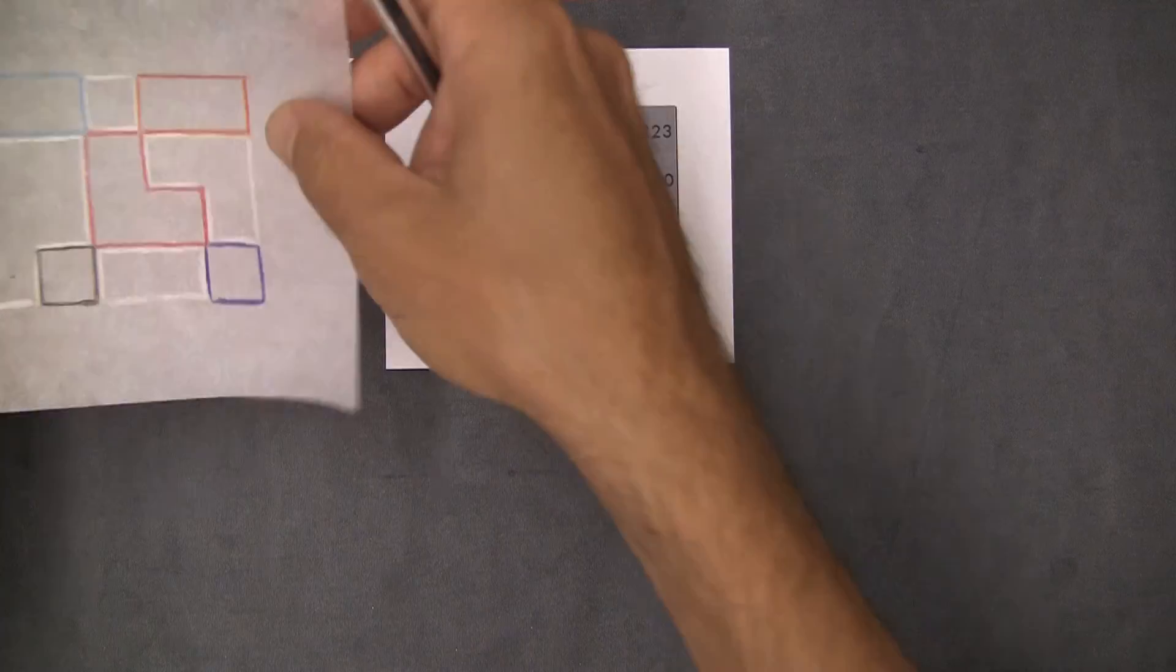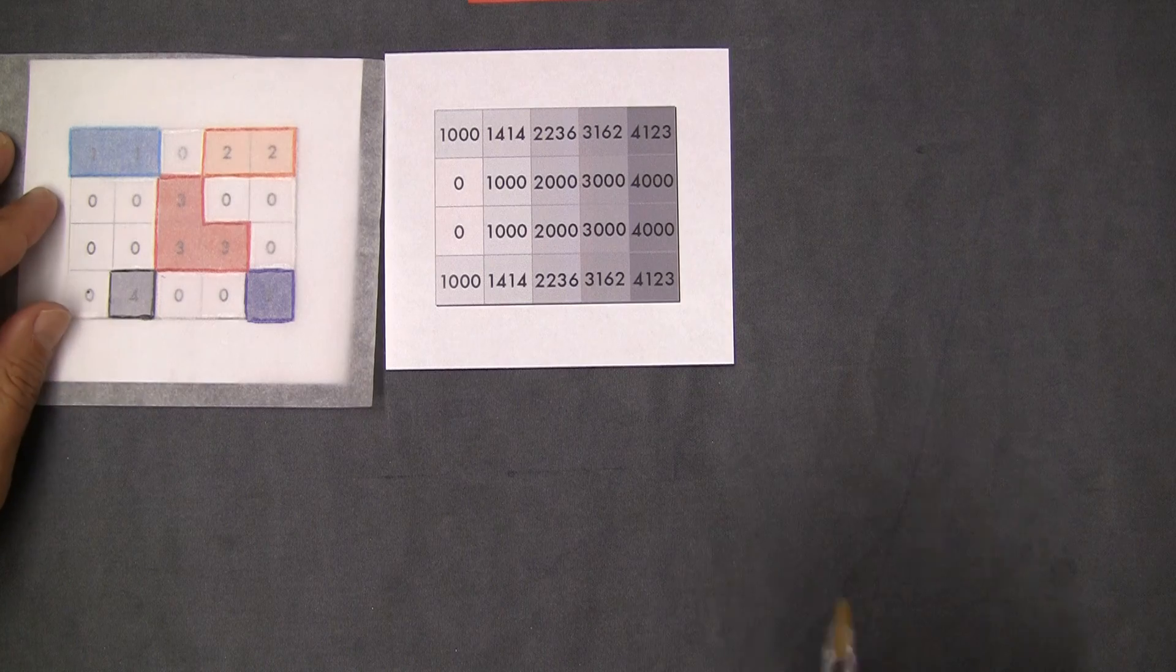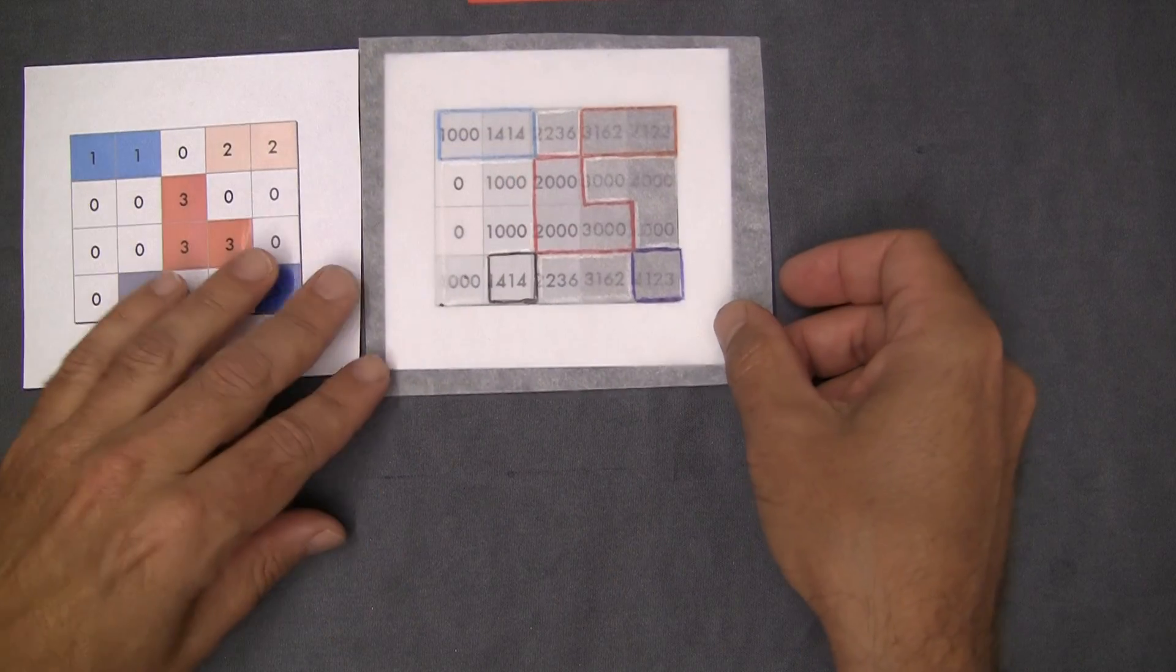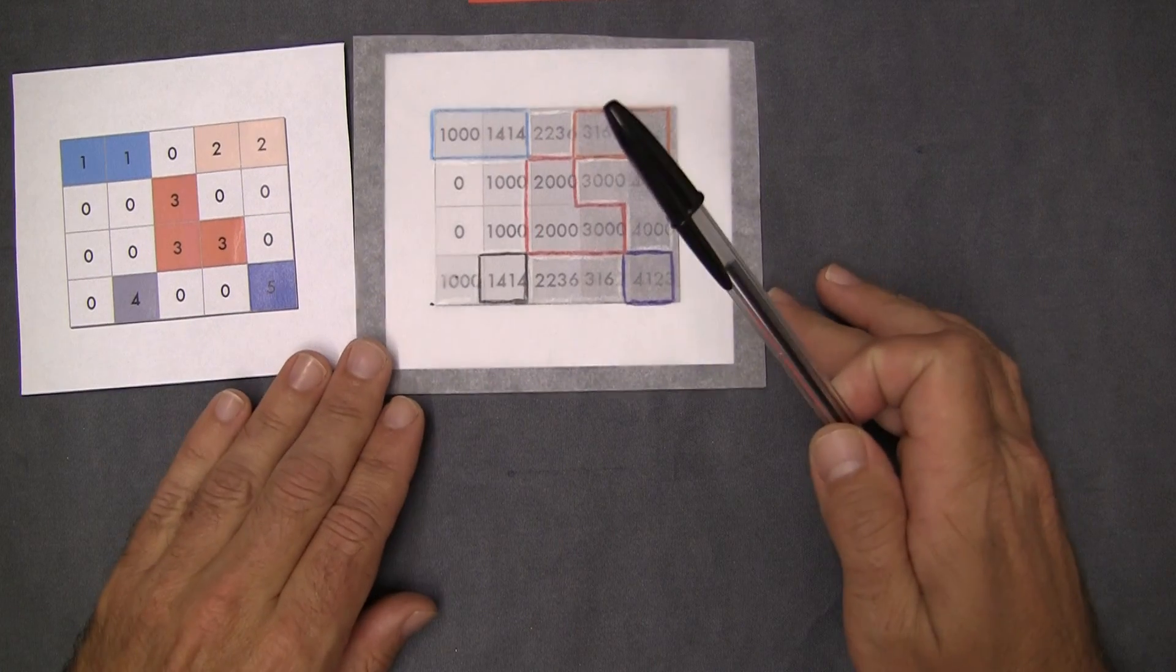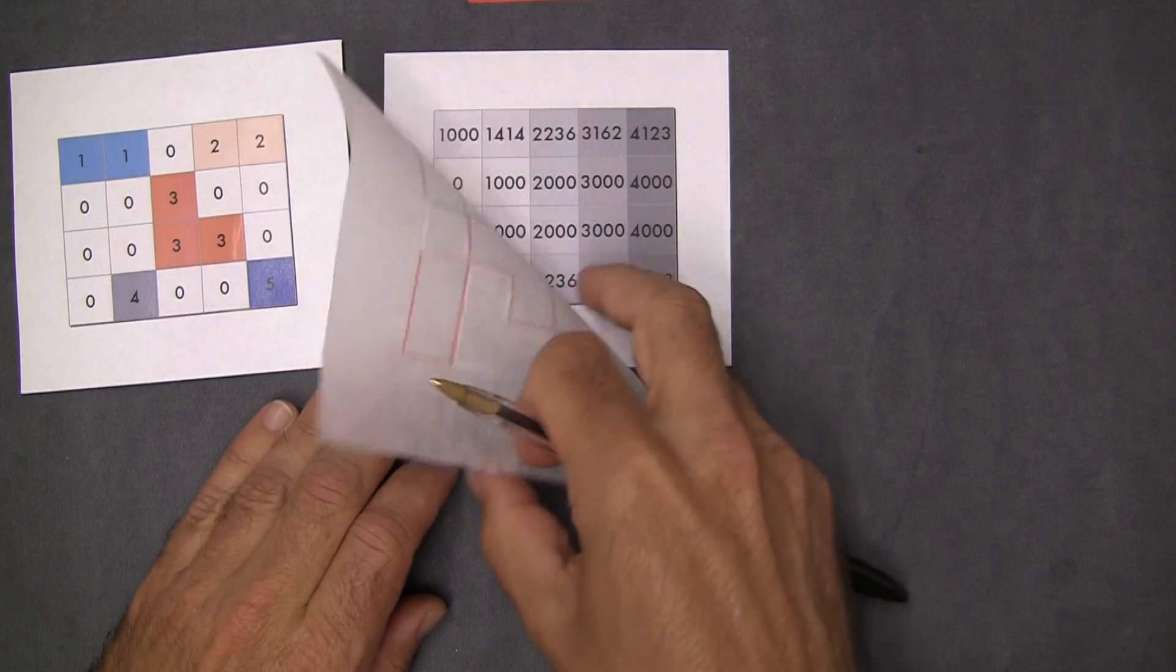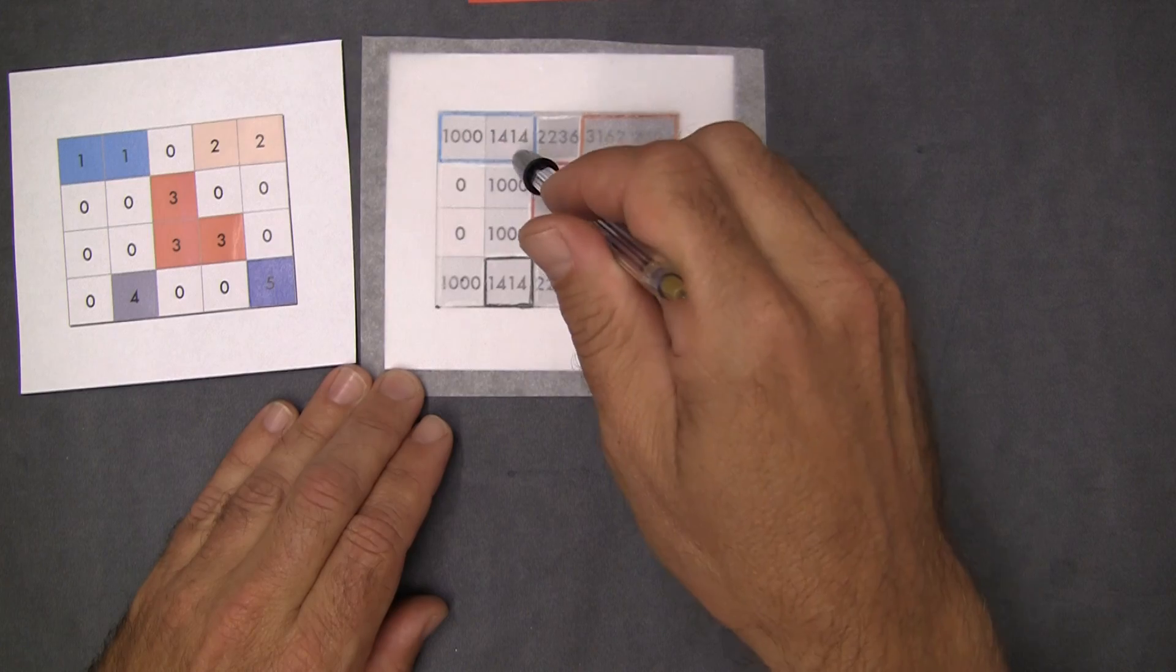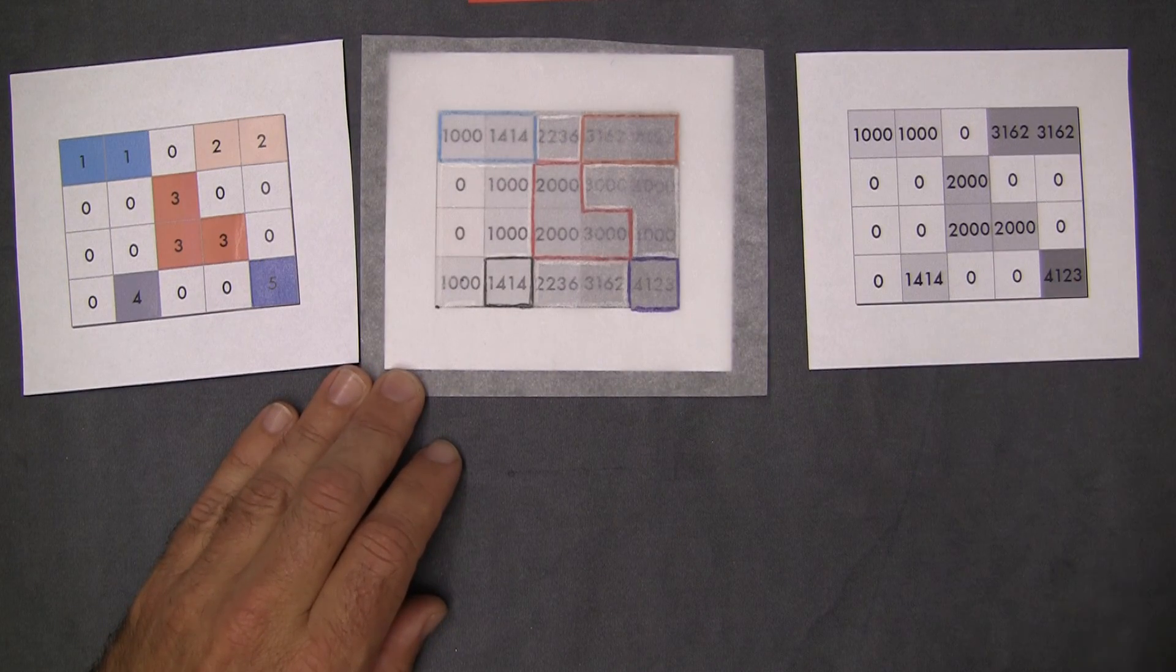And what we found is that we could use this object raster to create windows that we could then drop on top of our distance raster. And then say something about the values in this raster based on the zones in this raster, right? So that we would get something like this.